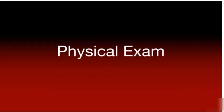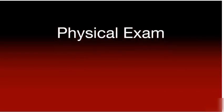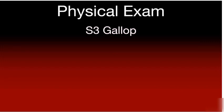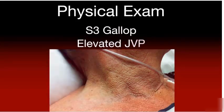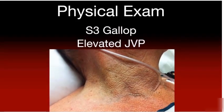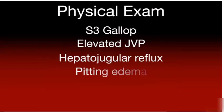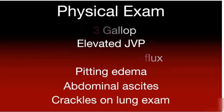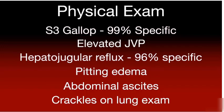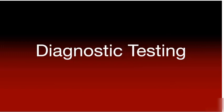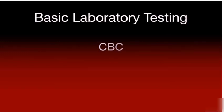Next, we review clinical exam features. A detailed exam in a heart failure patient helps establish the diagnosis and evaluate for underlying etiology. Heart failure specific exam findings include an S3 gallop, elevated jugular venous pressure, hepatojugular reflux, pitting extremity edema, abdominal ascites, and crackles on lung exam. Of these, an S3 gallop or hepatojugular reflux are both highly specific. Basic laboratory work should assess hematologic status, electrolyte levels, and renal function, though there are no abnormalities in CBC and BMP that are pathognomonic for congestive heart failure.